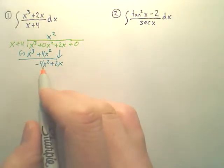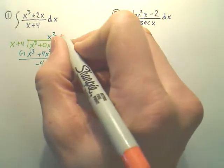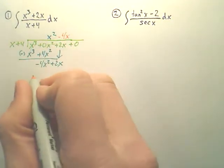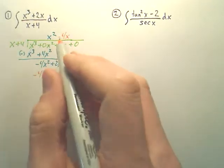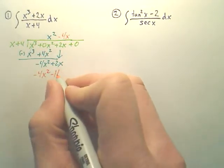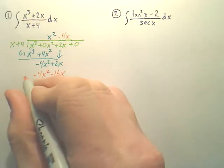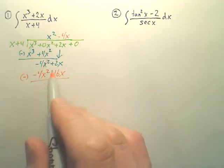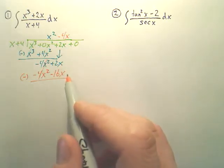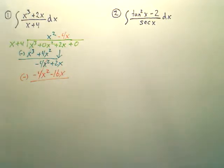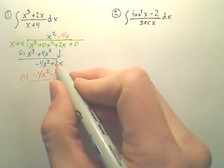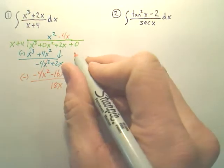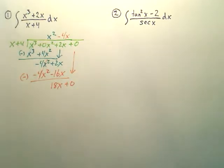x times what gives you negative 4x squared? It would be negative 4x. So this times this gives you negative 4x squared. This times this gives you negative 16x. Remember, when you're long dividing, you're basically just trying to cancel the first piece. The second piece just comes along for the ride. And when I subtract down, this gives me actually 18x. A lot of people mess up there. Bring down this row.